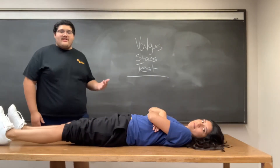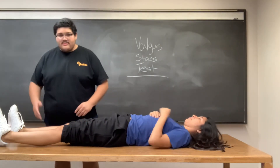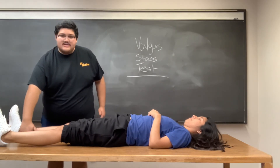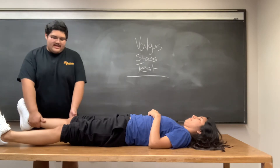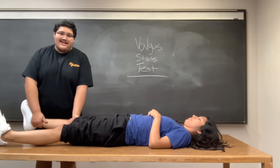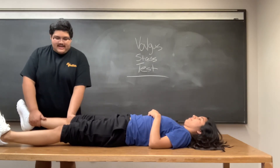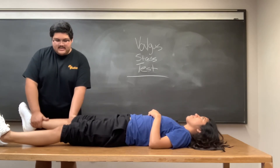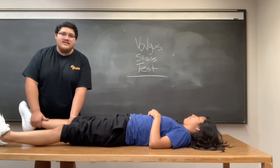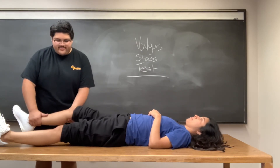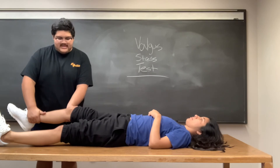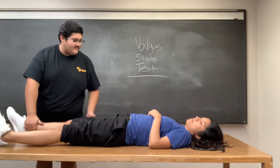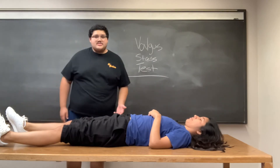Now I will be performing the valgus stress test bilaterally. We will have one hand on the medial aspect of their ankle and our other hand on the lateral aspect of their knee, and apply valgus force with their leg extended. Do you feel any pain? No — no gapping either. Then 30 degrees flexion — perform the test. No gapping at all. Any pain? No. And that is the valgus stress test.